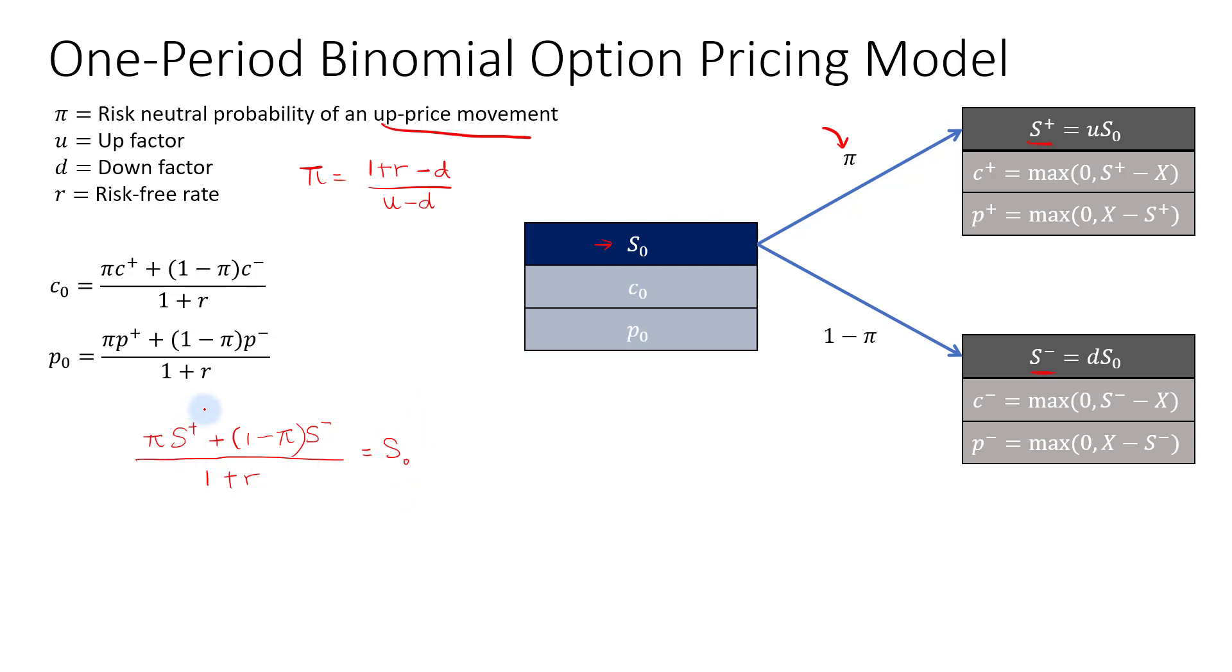Then we will substitute the S plus and S minus based on their relationship to the up factor and to the down factor. For S plus, we will replace it with U times S sub 0, and for S minus, we will replace that with D times S sub 0. And then we'll multiply 1 plus R over to the right-hand side, so that's S0 times 1 plus R. So take note that we can cancel off S sub 0 on both sides.